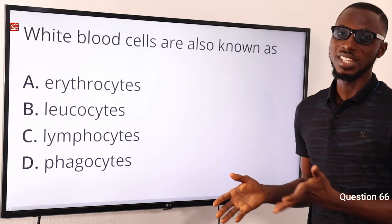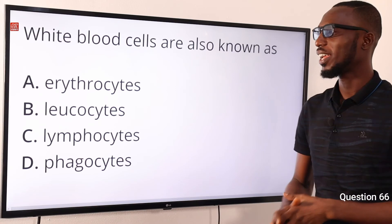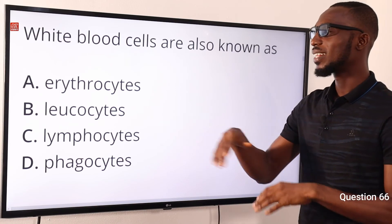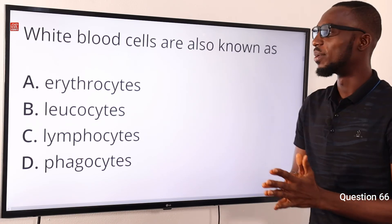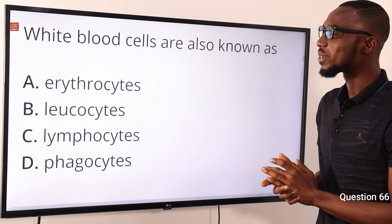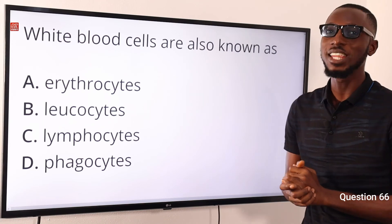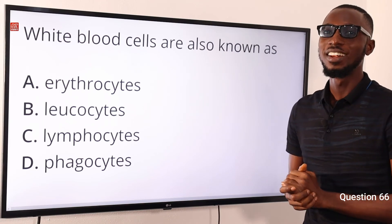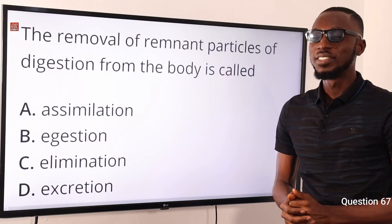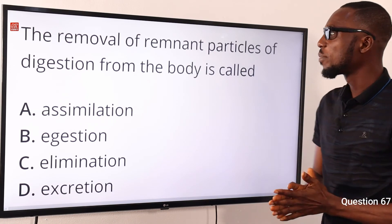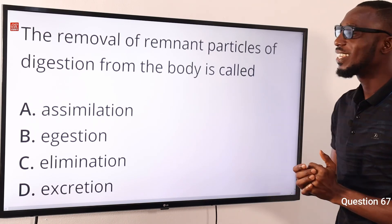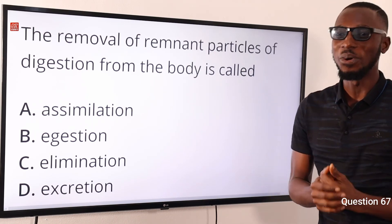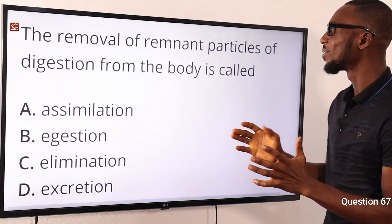Number 66: white blood cells are also known as what? They are known as leukocytes. Erythrocytes refer to red blood cells. So the correct option is option B for leukocytes.